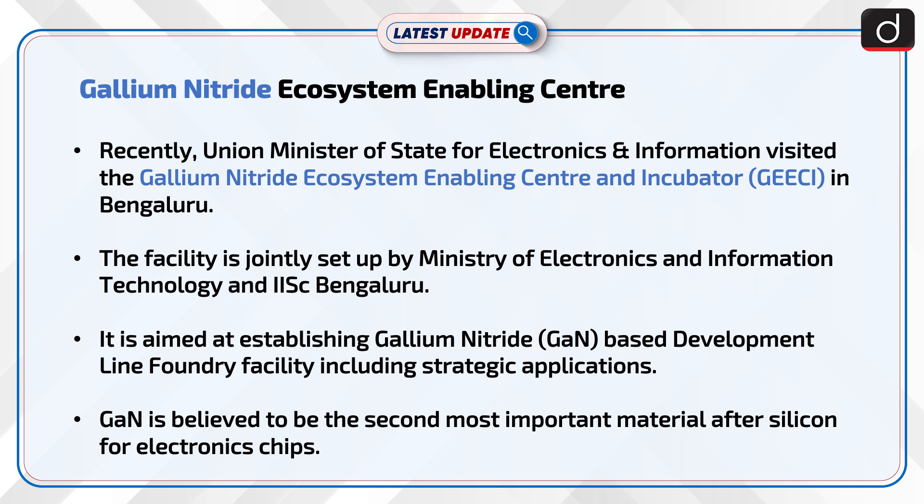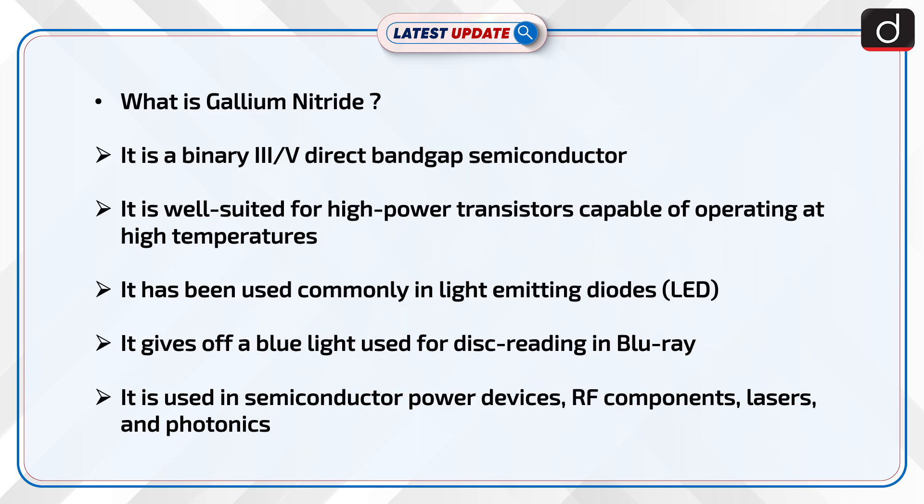That is GECI, in Bengaluru. The facility is jointly set up by the Ministry of Electronics and Information Technology and IISc Bengaluru. It is aimed at establishing a Gallium Nitride (GaN) based development line foundry facility, including strategic applications. GaN is believed to be the second most important material after silicon for electronics chips.